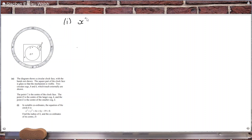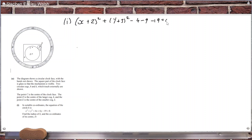Completing the square: that's (x + 2)² + (y + 3)² minus 4 minus 9 minus 19 equals 0.